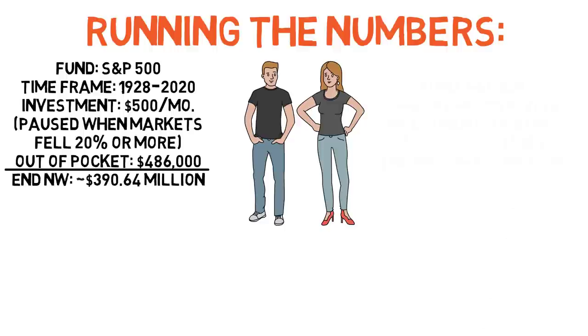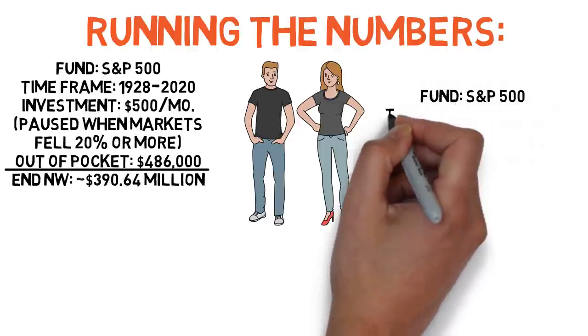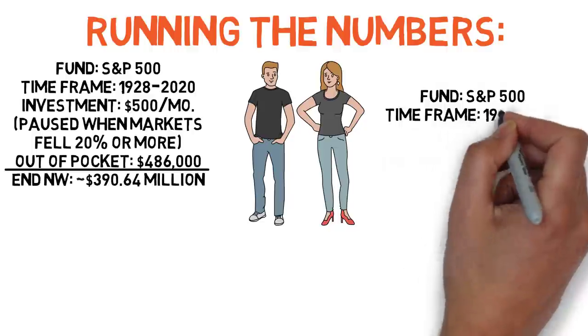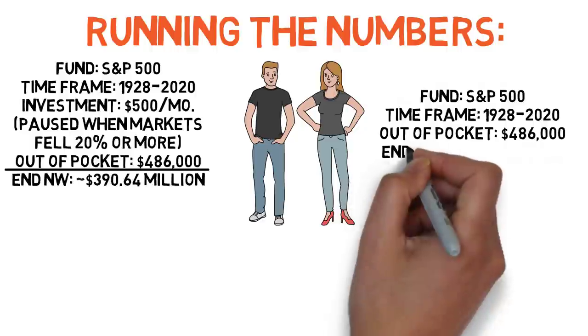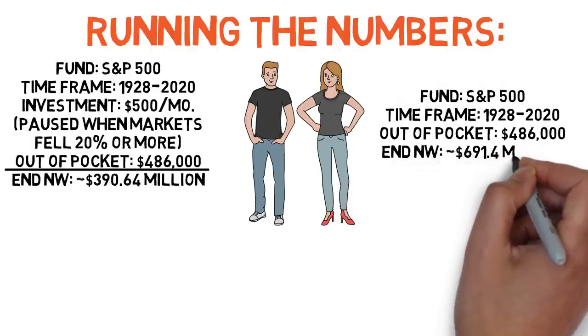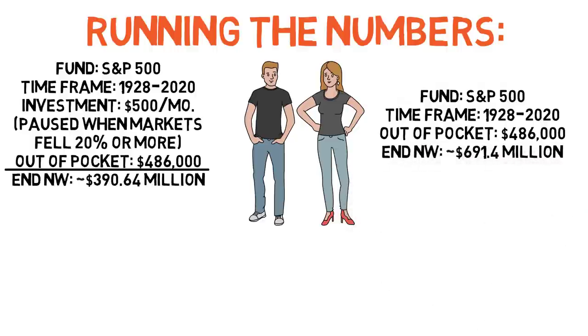It's because he wasn't able to take advantage of buying the market dips like Jane did. For the record, in case you were wondering, if Jane had invested the same $486,000 as John, she would have wound up with over $691.4 million. That's roughly 77% more than John over the same time period with the same amount of money invested. That's how much of a difference buying the dip can make over time.